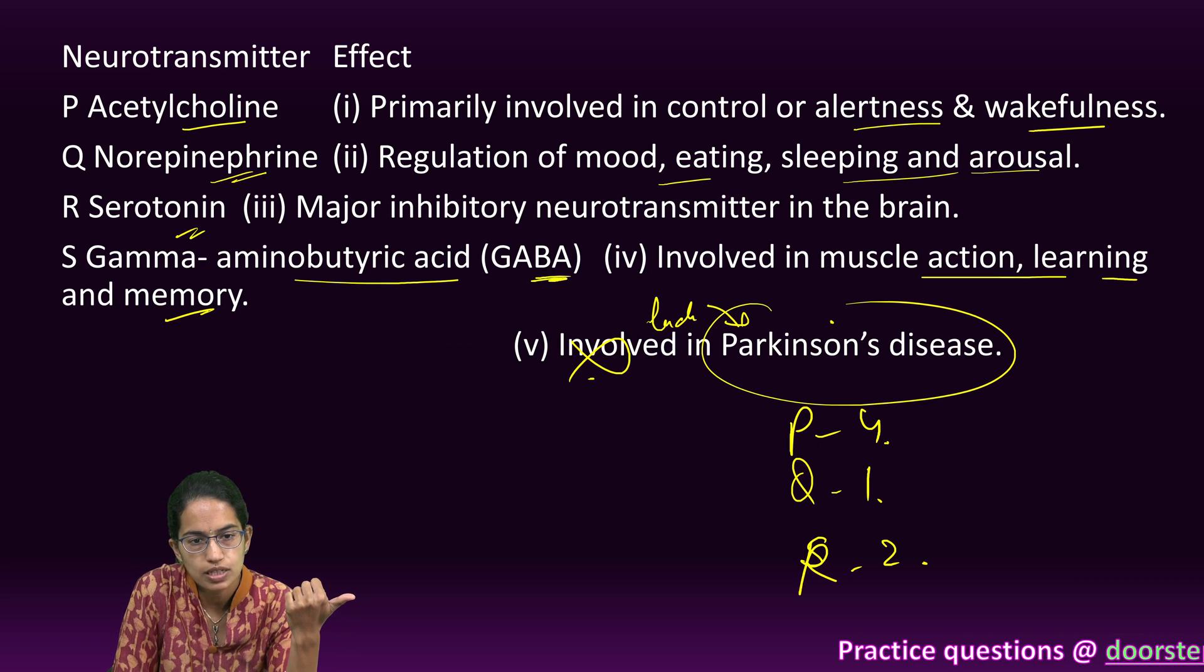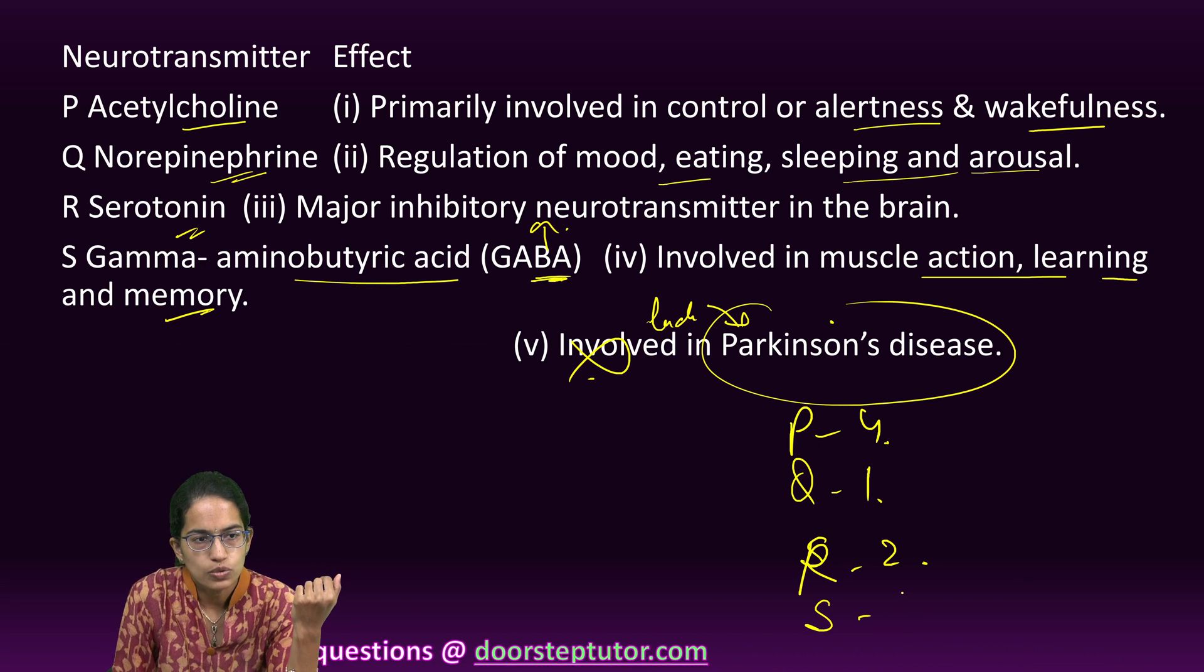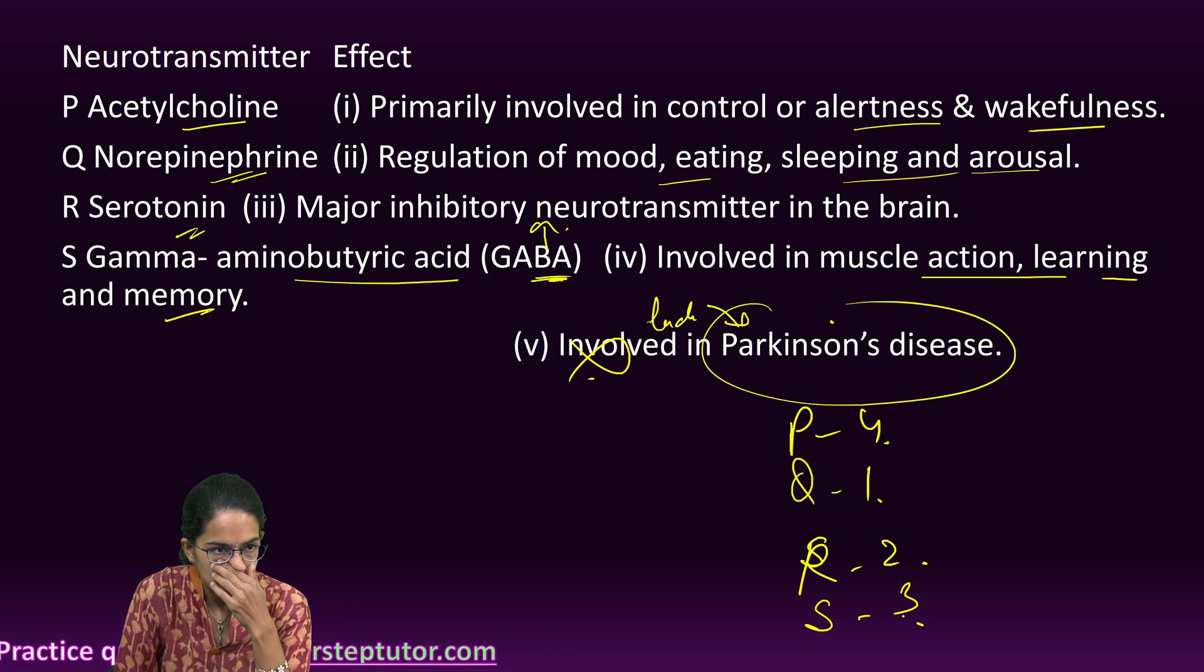immunoburotic acid which is the GABA. GABA is an inhibitory neurotransmitter which we have already studied. S goes with 3. Those are the correct matches here.